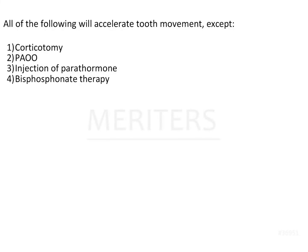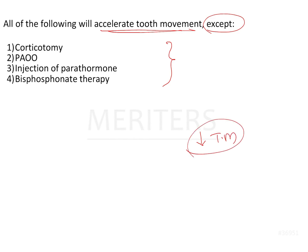All of the following will accelerate tooth movement except. We have to identify from these options which is the one that is going to reduce tooth movement — whether it is corticotomy, periodontally accelerated osteogenic orthodontics, injection of parathormone, or bisphosphonate therapy. Let us have a look one by one at how each of these affects tooth movement.